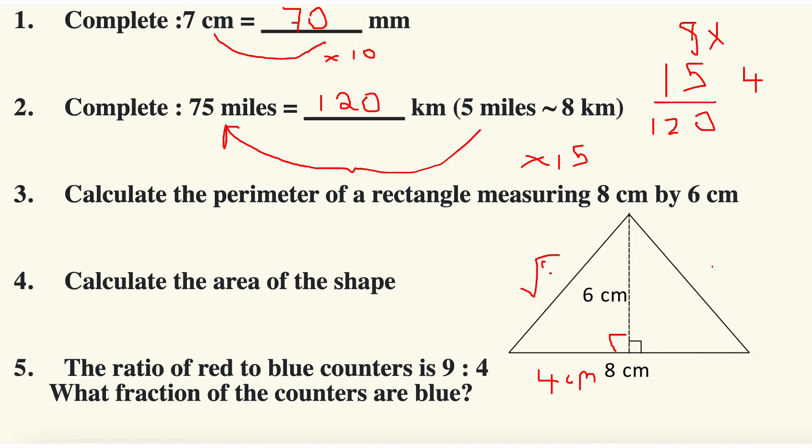The hypotenuse is going to be six squared plus four squared square rooted, so I'm going to have the square root of 52, I believe, because six squared is 36 plus four squared. 36 plus 4 times 16 is equal to 52.